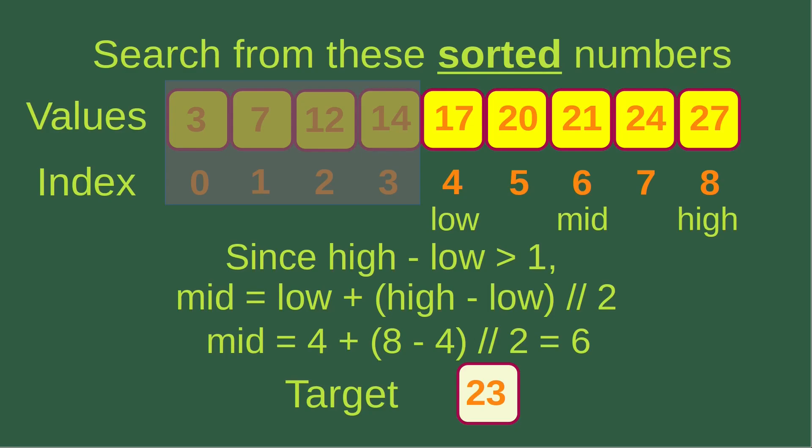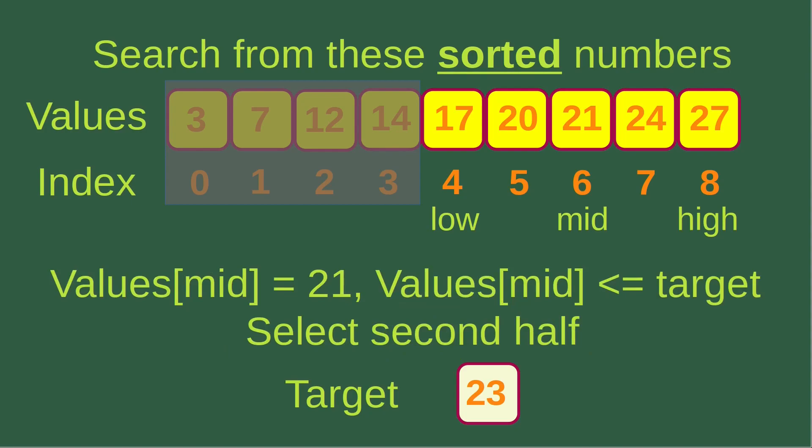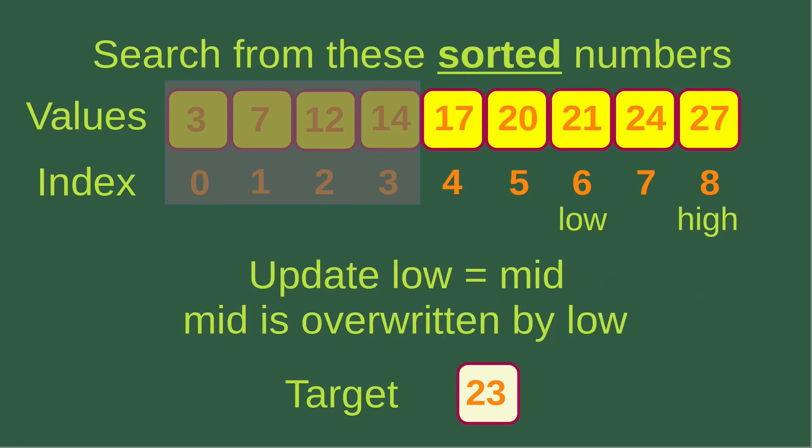I check the condition: eight minus four is four, larger than one. Using the formula, the mid-index is six, which corresponds to number 21. Since 21 is smaller than or equal to the target of 23, I choose the second half again by updating the low index to become the mid-index. Low becomes six and the high index remains eight.